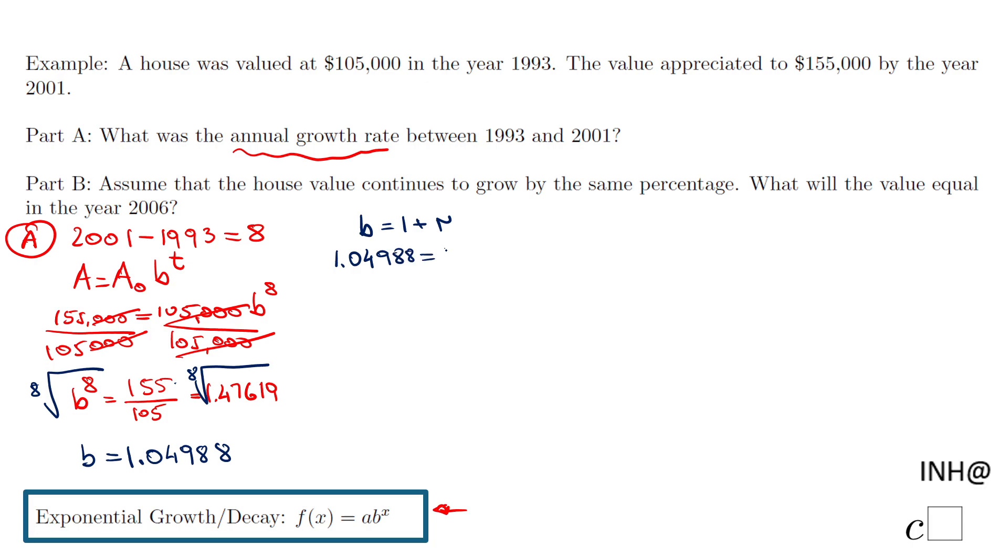So the number in my calculator—I'll copy the first five digits—equals 1 plus r. To find r, I subtract 1.